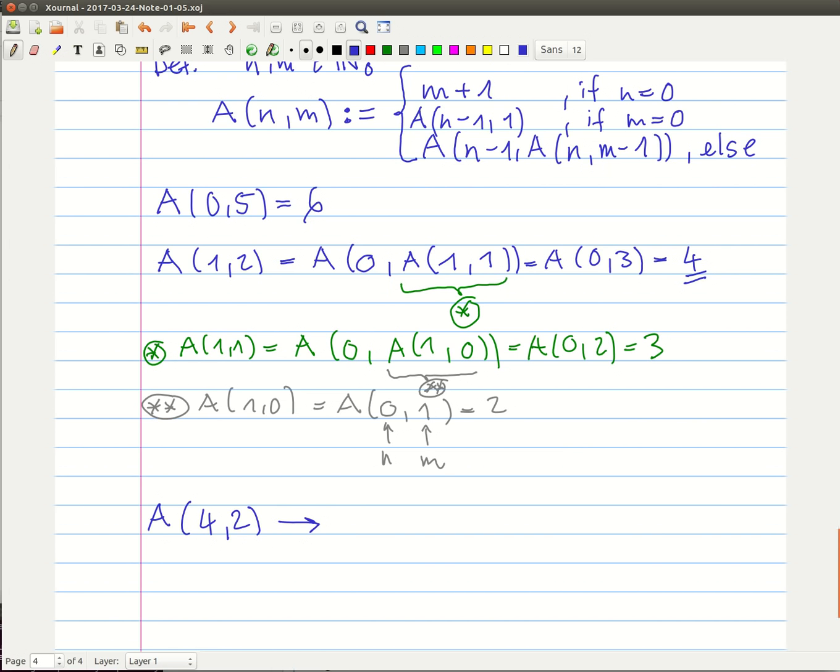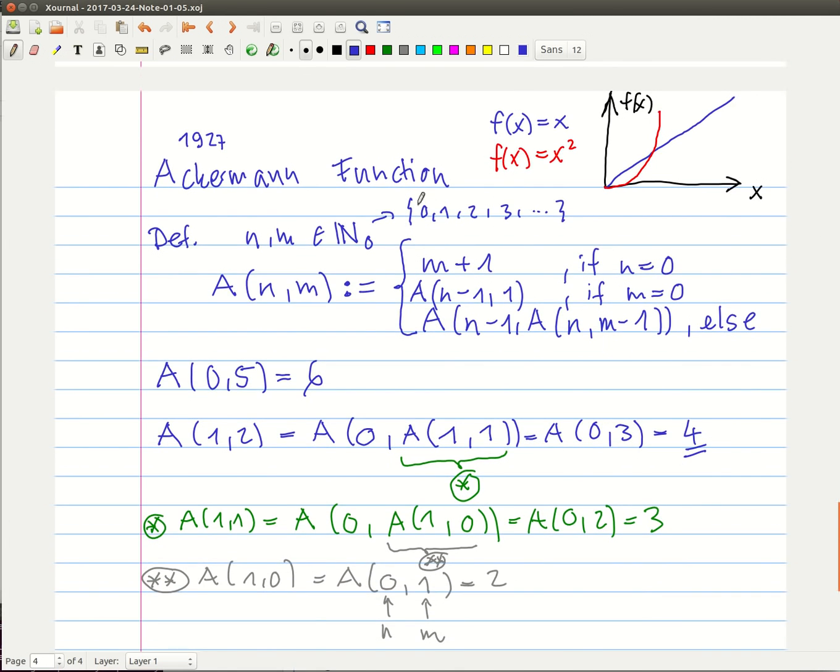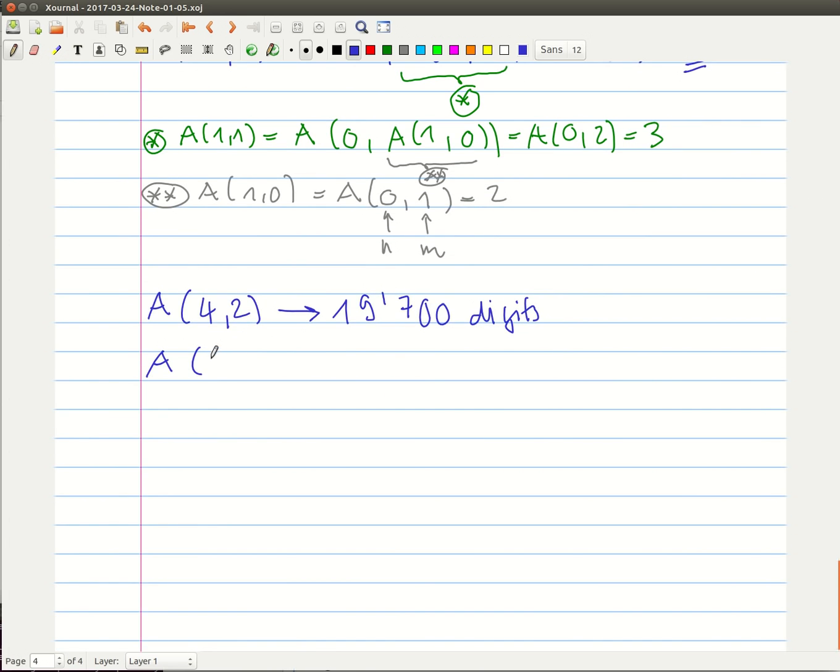But if you try to compute this, you will end up with a number that has like 19,700 digits. You know, even with these small numbers, this is a very large number. And I mean, imagine what would happen if you say, I mean, I'm free to choose any integer value, you know, as we stated above, you can use a million. And I mean, even if you plug in a 50, 50, 10, I mean, whoa, this thing will explode.